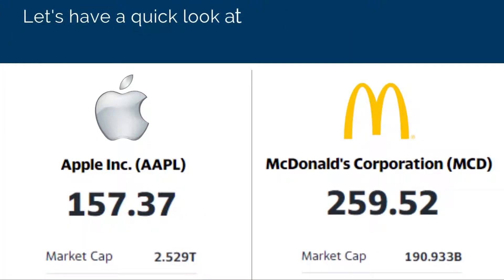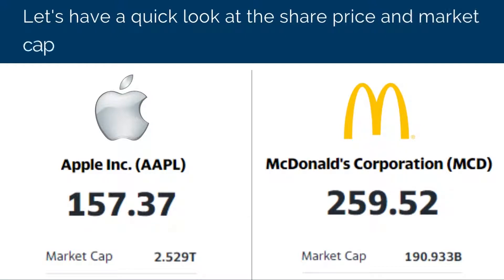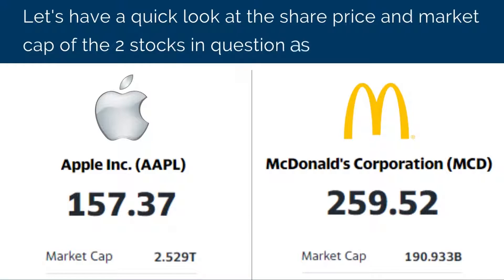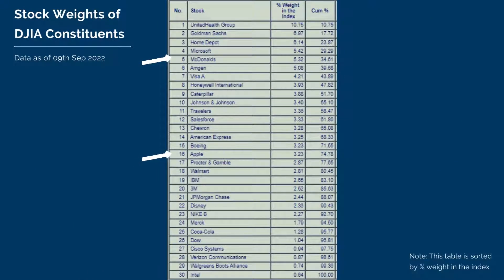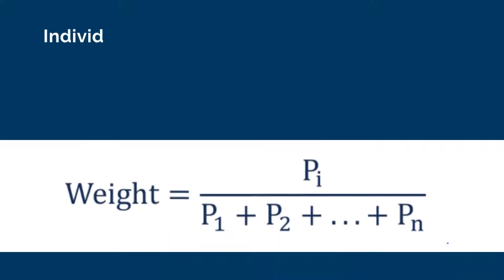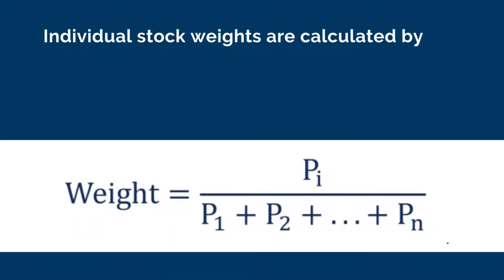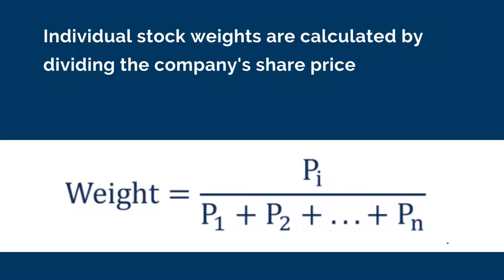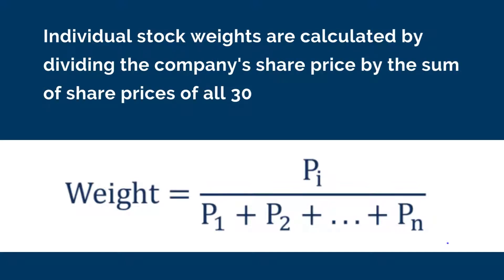Let's look at the share price and market cap of the two stocks in question. As of 9th September, the stock price of Apple was $157, whereas McDonald's was at $259. The market cap of Apple was $2.5 trillion and that of McDonald's was $190 billion. On screen you can see a table detailing the individual stock weights of the constituent companies in the Dow Jones Industrial Average, as of 9th September market close, sorted by percentage weight. Individual stock weights are calculated by dividing the company's share price by the sum of share prices of all 30 companies in the index. Please have a look at the formula on screen for a better understanding.